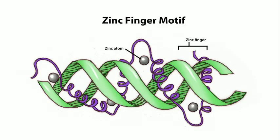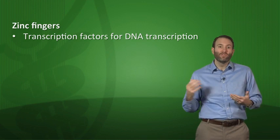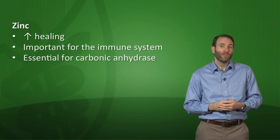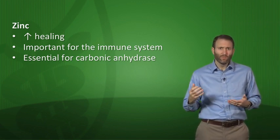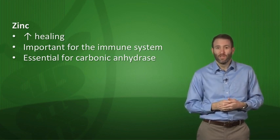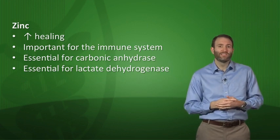Moving on to zinc — zinc is essential for at least 100 different enzymatic activities. Key ones include zinc fingers, which are transcription factors for DNA transcription; without zinc you can't transcribe DNA well to make proteins. This is why zinc is supplemented in healing patients to generate collagen. Zinc is also essential for carbonic anhydrase — found in renal tubules and red blood cells — and for lactate dehydrogenase.